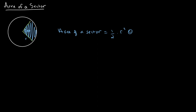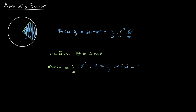Let's go through a straightforward example. If we have a circle with a radius of 5 centimeters, so r equals 5 centimeters, and the sector inside that circle has an angle of 3 radians, then the area of the sector is one half multiplied by 5 squared, multiplied by 3. That gives us one half times 25 times 3, which equals 75 over 2, which is our area.